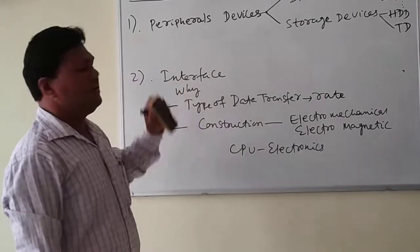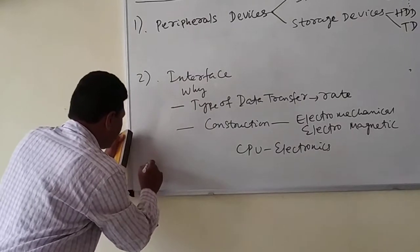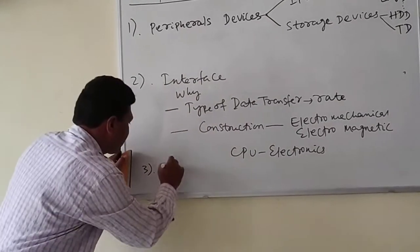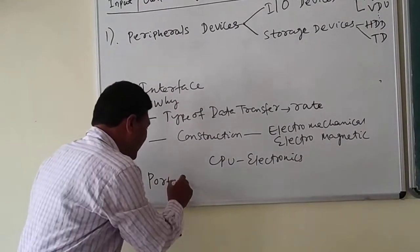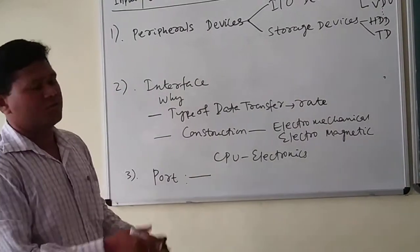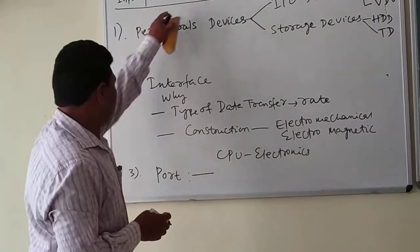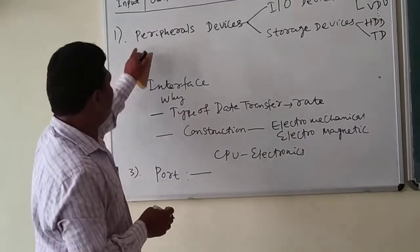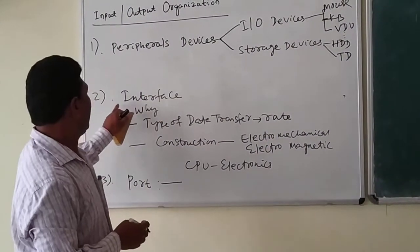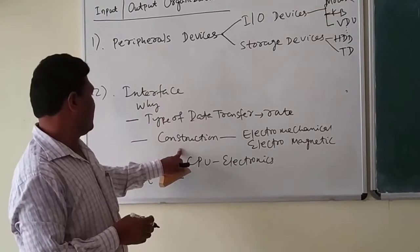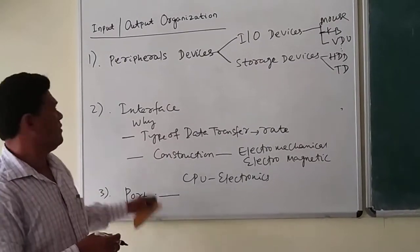So I/O devices cannot be directly interfaced or connected to the CPU. All I/O devices require different types of ports to connect so that they can transmit data to the CPU. We have to think about which types of peripherals are there, how to connect these I/O devices to the system, and through which port the connection is to be made.